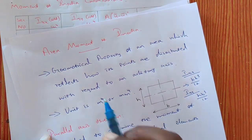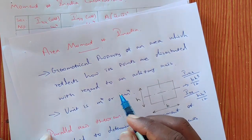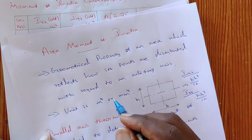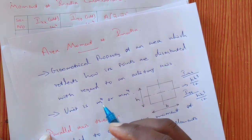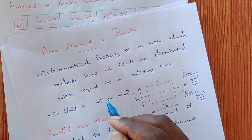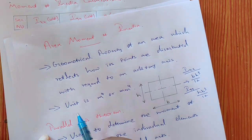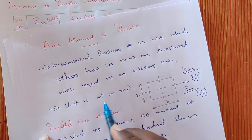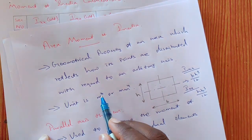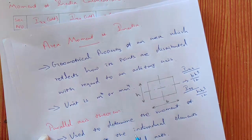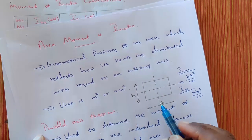This area moment of inertia is mostly used to calculate the deflection of any beams. The unit for area moment of inertia is either meter to the power 4 or mm to the power 4.